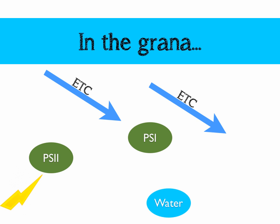We have two photosystems, labelled here as PS2 and PS1. We have two electron transport chains that work in the same way as oxidative phosphorylation works.